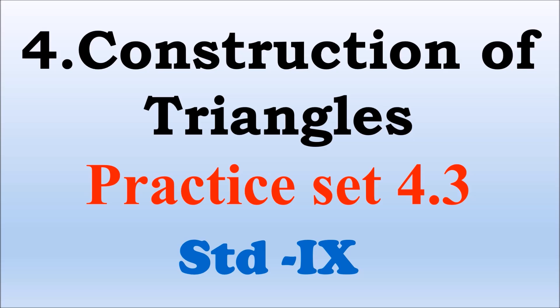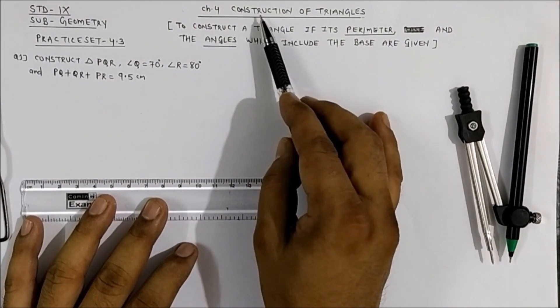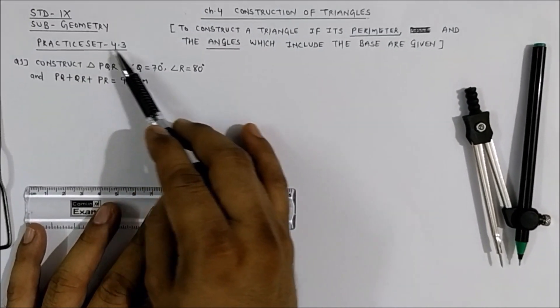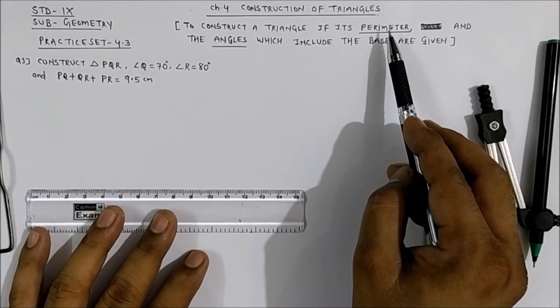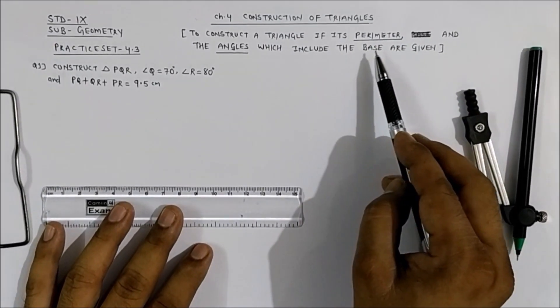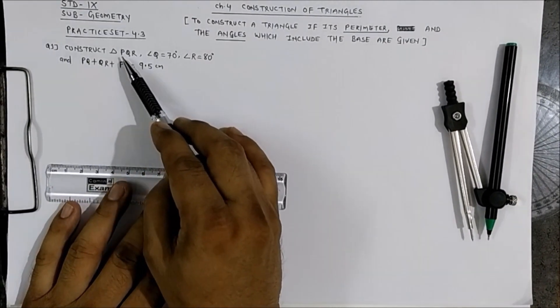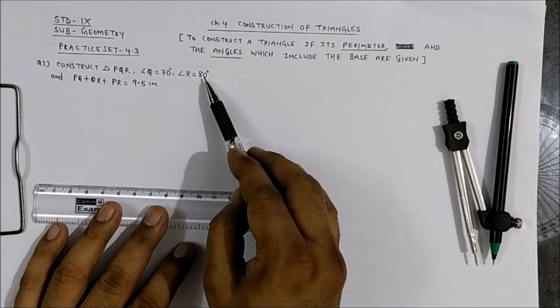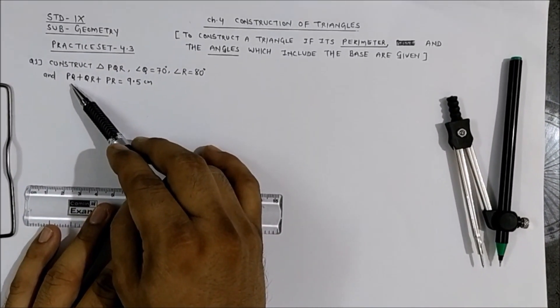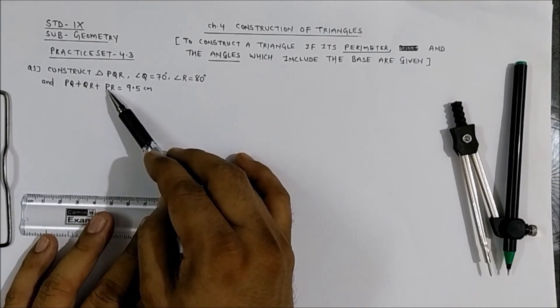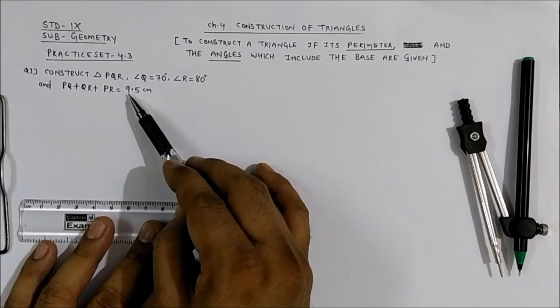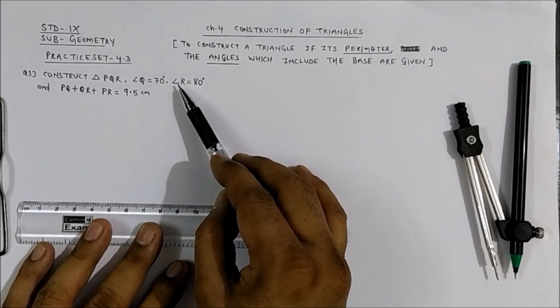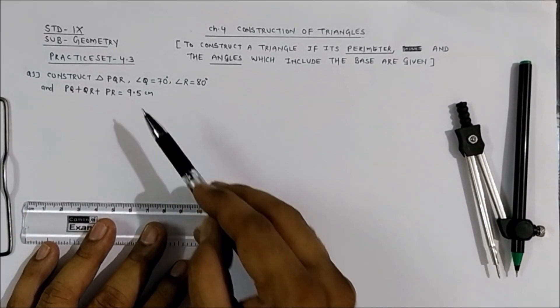In this video we will learn chapter number 4 construction of triangles, practice set 4.3. Today's topic: to construct a triangle if its perimeter and the angles which include the base are given. Question one: construct triangle PQR where angle Q is 70 degrees, angle R is 80 degrees, and PQ plus QR plus PR — the perimeter of triangle PQR — is 9.5 centimeters.